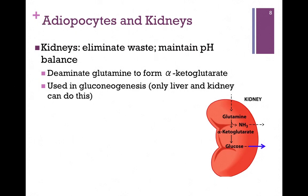The kidneys not only eliminate waste but also help maintain pH balance. One way they do this is by deaminating glutamine to form alpha-ketoglutarate, and those amine groups can be used to adjust pH balance. The alpha-ketoglutarate can then be used by the kidneys in gluconeogenesis to produce glucose — so only the liver and the kidney can carry out gluconeogenesis. It might seem odd at first, but remember, glutamine is one of the highest-concentration amino acids, providing a ready source of amine groups. The kidneys process a lot of glutamine, produce a lot of alpha-ketoglutarate, and it makes sense to convert that to glucose rather than simply eliminate it as a waste product.